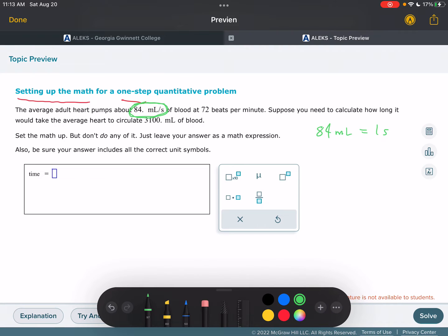Okay, and this is, pardon my watch here is making a lot of noise. Let's lose that. Alright, 84 mils per second of blood, 72 beats per minute. There's another conversion factor. 72 beats equals one minute.